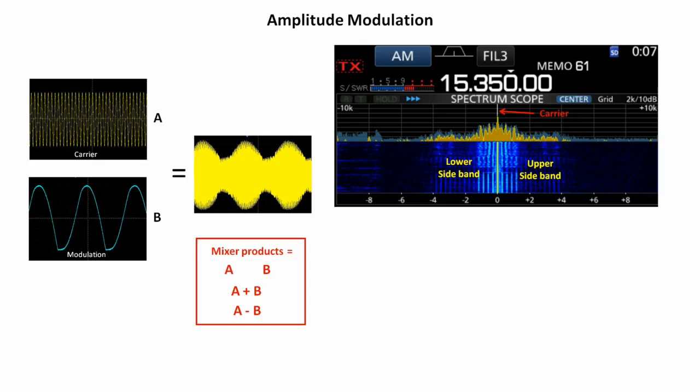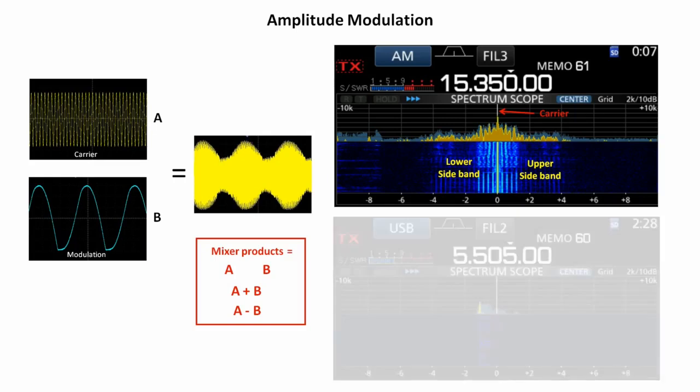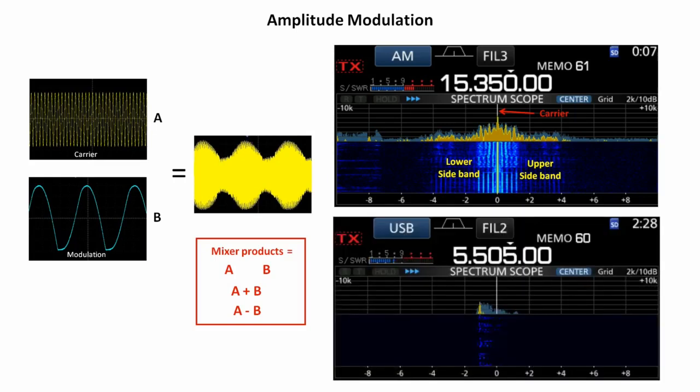Here on the same settings is a single sideband transmission. This one's on five megahertz. It's actually the aircraft weather station transmitted from the west of Ireland. Things to note: first of all, how much narrower it is. It's four or five kilohertz wide at the very most. You could fit five, maybe six of those into the same width that the AM transmission above is taking.